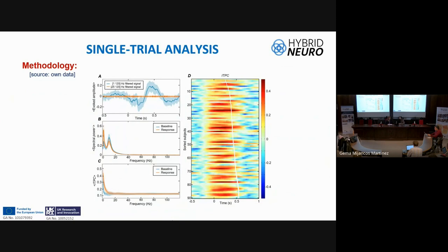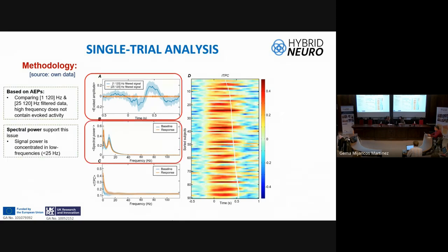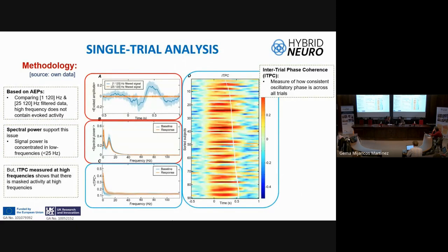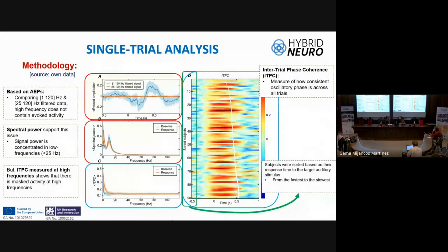For example, if we focus only on evoked amplitude and spectral power, we might conclude that only low frequencies are interesting, since no peak appears in the evoked amplitude and all power is at low frequencies. However, applying single trial analysis and computing inter-trial phase coherence reveals that at high frequencies there is an alignment of phase after the subject's response. So high frequencies do contain relevant information that is missed without single trial analysis.